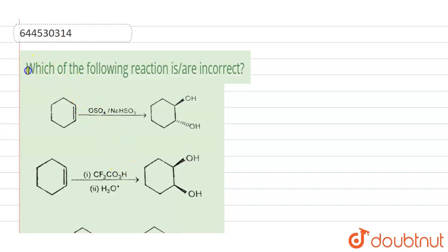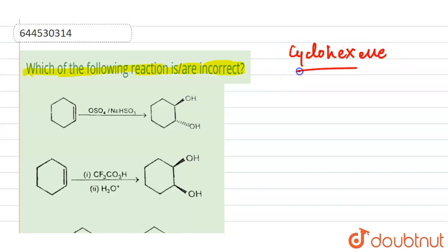The question is: which of the following reactions is or are incorrect? All the reactions shown are with cyclohexene. Let's look at the first reaction involving osmium tetroxide (OsO4).